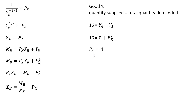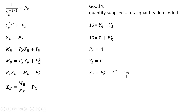We normalize the price of good Y to 1. Consumer A does not get any units of good Y — it's a bad for consumer A. Consumer B will get 16 units of good Y. Plugging 4 into consumer B's demand equation for good Y — squaring that — we get 16.